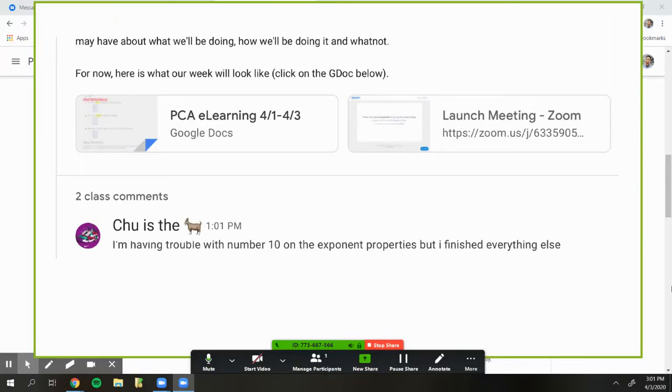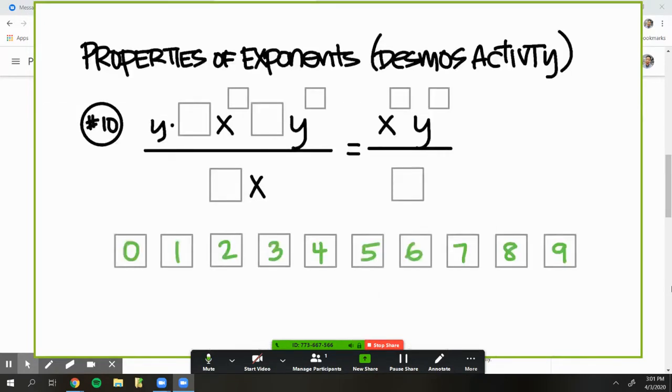Here's a comment I received from one of our longtime subscribers. I love the name 'she was the goat.' She was the goat. Nah man, you're the goat. But it looks like you're having trouble with number 10 on the exponent properties. You finished everything else, so let's go ahead and take a look at that problem together.